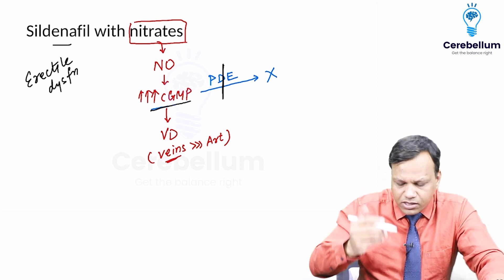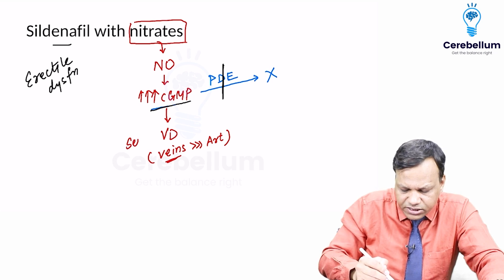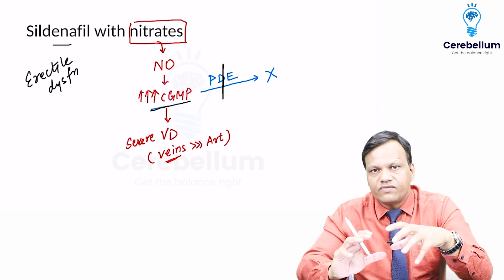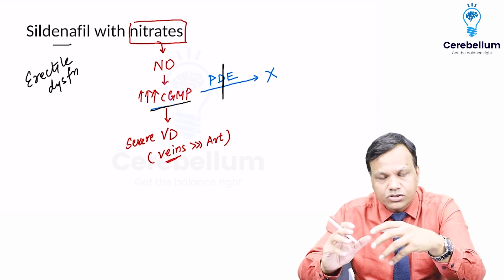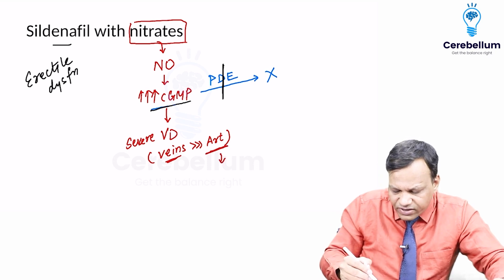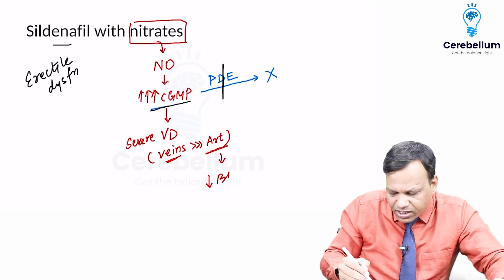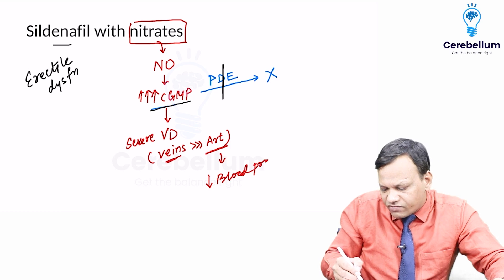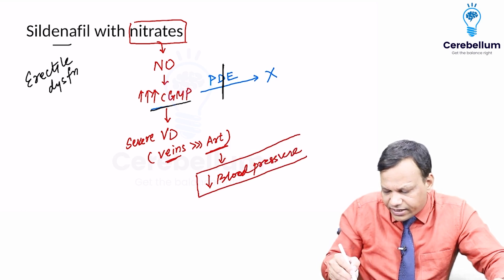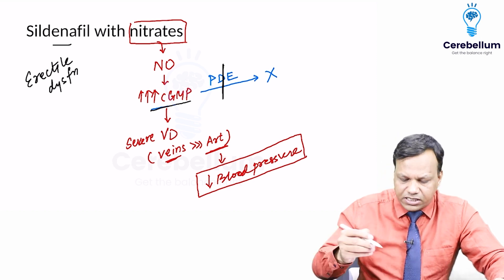When cyclic GMP becomes very high, there will be severe vasodilation - not slight, but very much vasodilation. There will be significant vasodilation of arteries also. Normally nitrates mainly dilate veins, but when there is dilatation of arteries, that decreases the systemic blood pressure. The person can develop severe hypotension and can die.